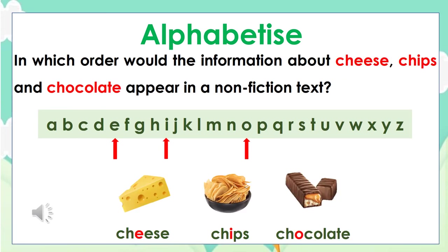In which order would the information about cheese, chips, and chocolate appear in a non-fiction text? The first two letters in all these words are the same, so we look at the third letter of each word. We would find cheese, chips, and chocolate in alphabetical order.